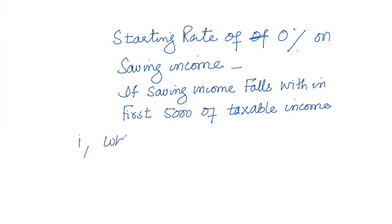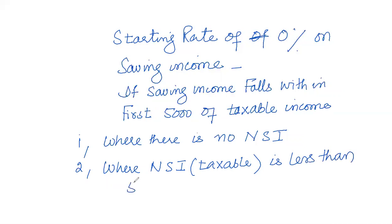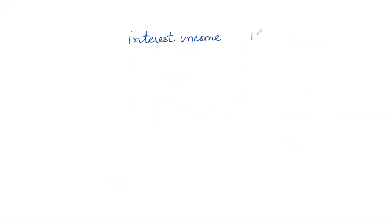There are two possible situations where this 0% starting rate applies on saving income. The first situation is where there is no non-saving income — then this concept is applicable. The second situation is where taxable non-saving income is less than £5,000.